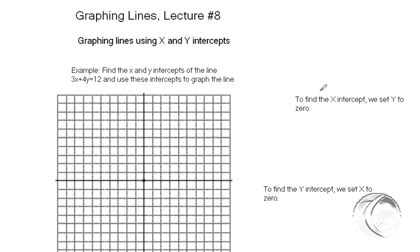Now, you have to remember to find the x intercept, we set y to zero. To find the y intercept, we set x to zero. So if you're going to find an intercept, you always set the other variable to zero. That's how you remember.